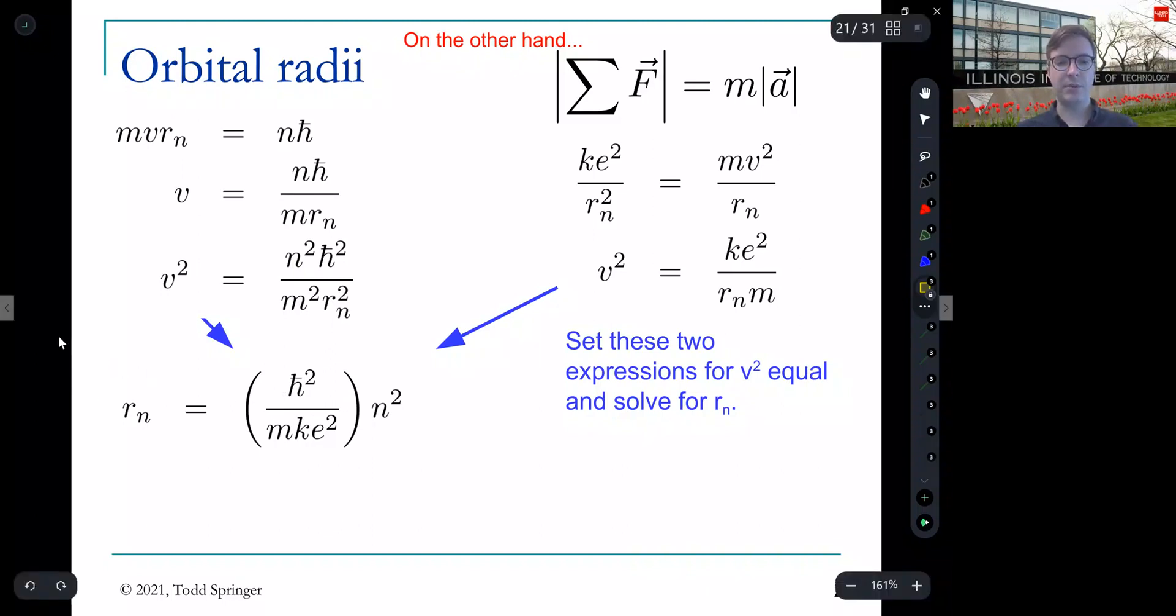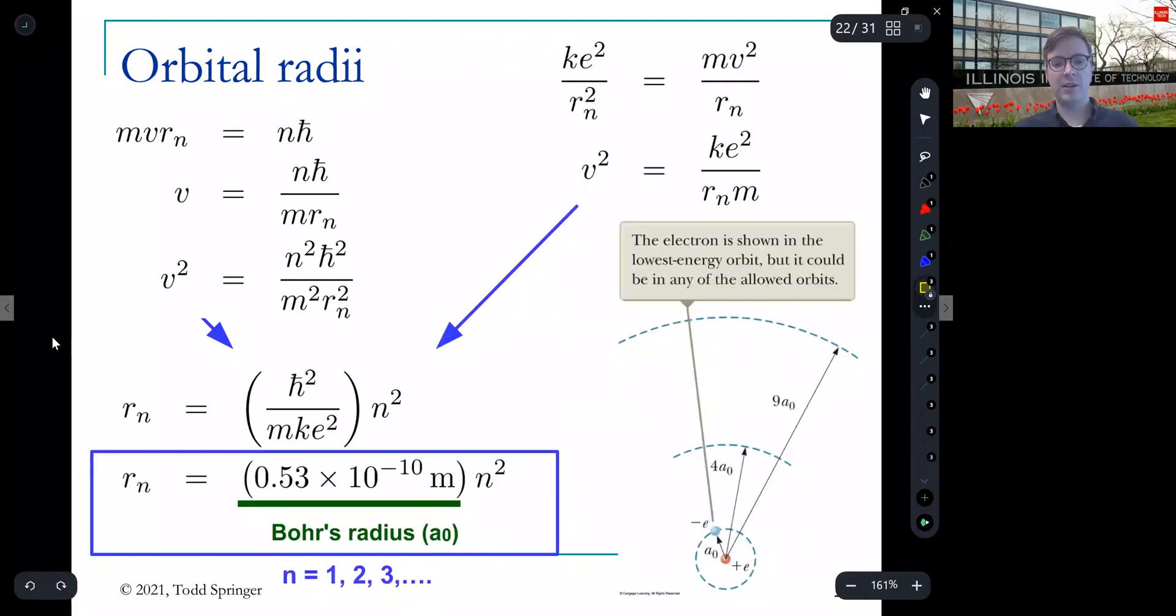What's the value of this constant? Put in some numbers and you find this thing in parentheses is equal to this value, 0.5 times 10 to the minus 10 meters, about half an angstrom. We call it Bohr's radius, A0. So basically, the radii that Bohr predicts that the electron can be at are A0 is the lowest one, 4A0 is the second lowest one, 9A0 is the third lowest one, and so on. Also gives you a sense of the size of an atom, about half an angstrom, 0.5 times 10 to the minus 10 meters. So this is a prediction of his model.